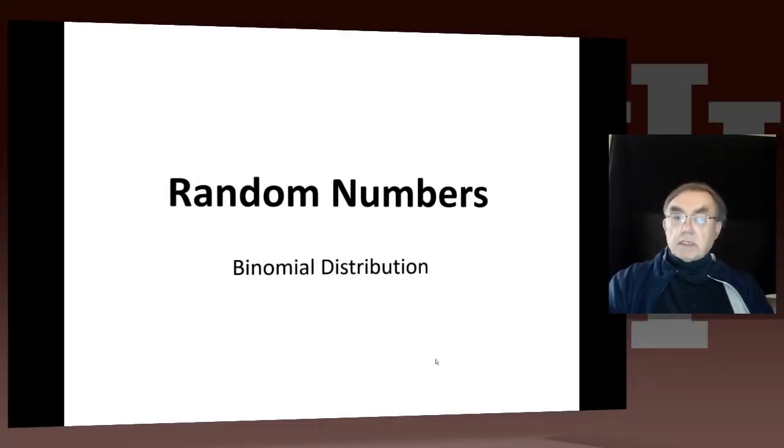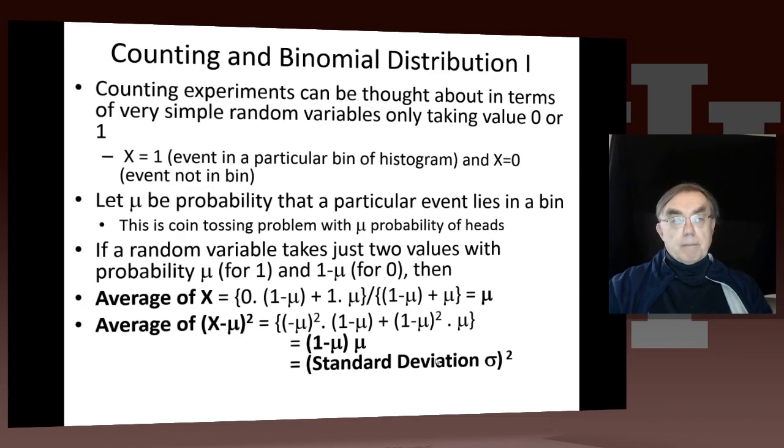Now we come to the next lesson in this physics use case, where we use the opportunity to discuss the binomial distribution, which is a very important concept in the theory and practice of random numbers. Many things have the binomial distribution. To get the binomial distribution, we need to think of things that are very simple, which only take the value zero or one.